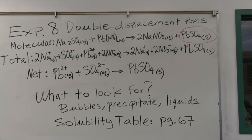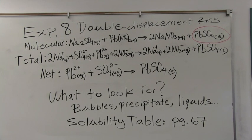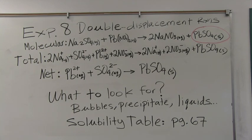So double displacement reactions, it's very important to know that unlike single displacement reactions, electrons are not being transferred here. That means the charges of the metals remain the same, the charges of the polyatomic ions remain the same. Electrons are not being transferred here.